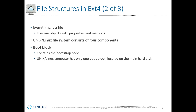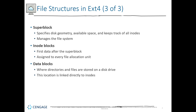The first component is the boot block, which contains the bootstrap code. A Linux computer only has one boot block and it is located on the main disk. The second area is the super block, which specifies the disk geometry and available space. It manages tracking of all the inodes, manages the overall file system, and handles the physical space and physical layout of the disk.